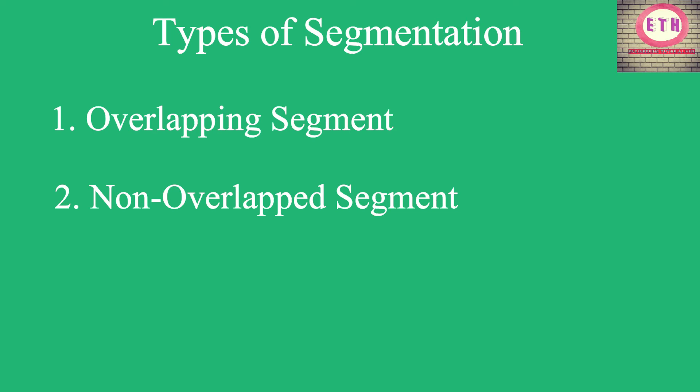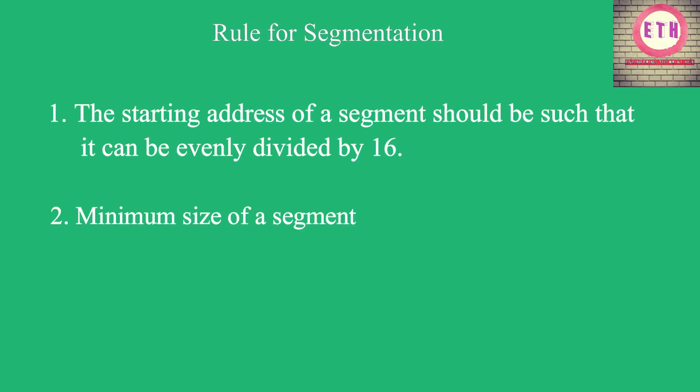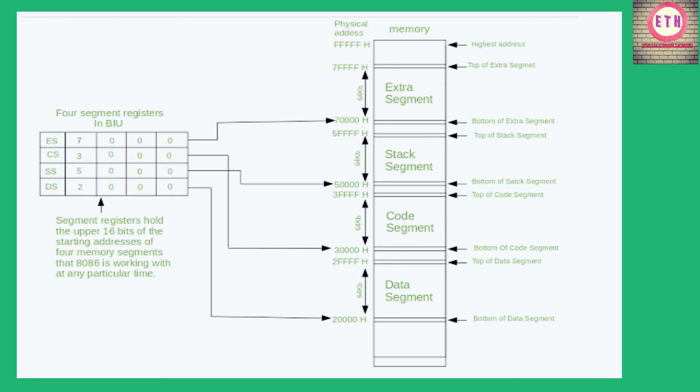The segmentation process follows some rules. The first rule is that the starting address of a segment should be such that it can be evenly divided by 16. The second rule is that the minimum size of a segment can be 16 bytes and the maximum can be 64 kilobytes. This diagram shows the segmentation process applied on the 1 MB physical memory of the 8086 microprocessor.